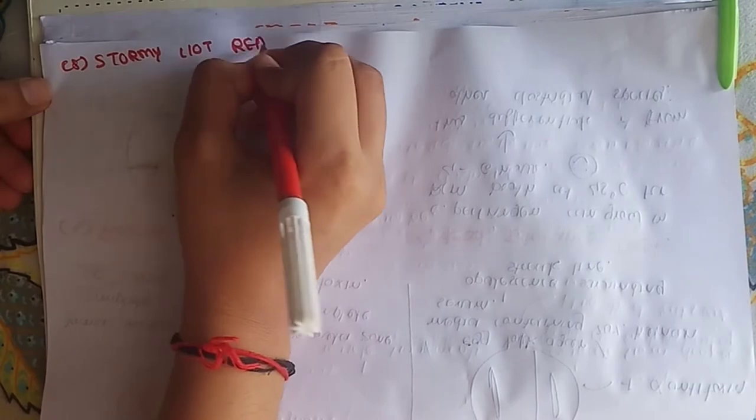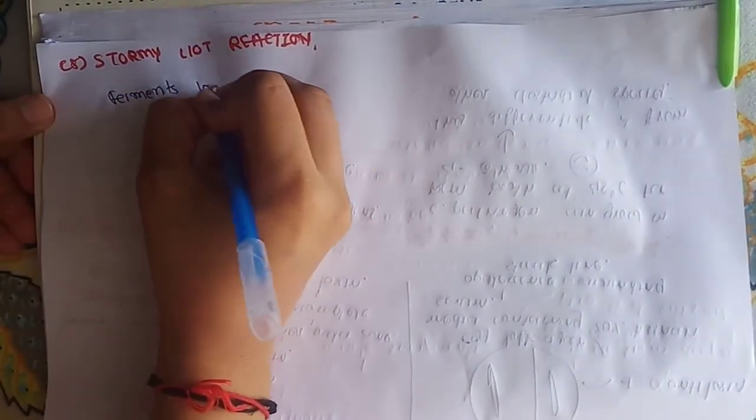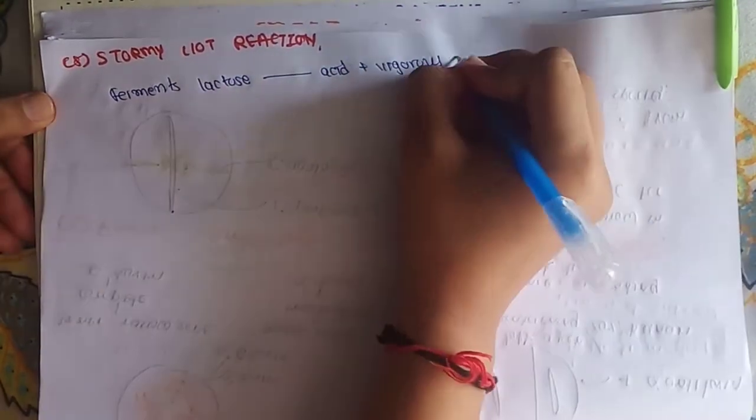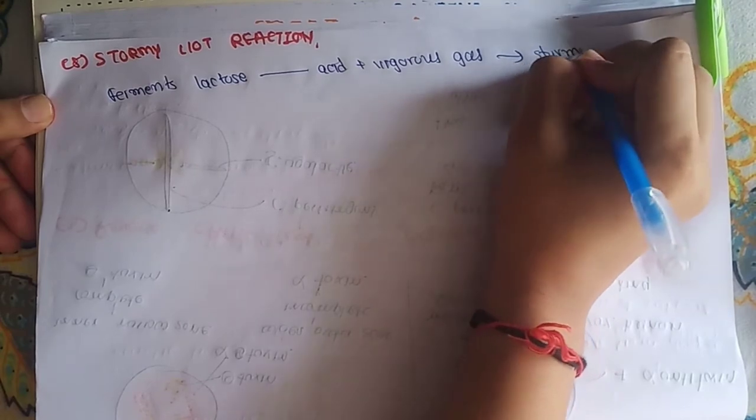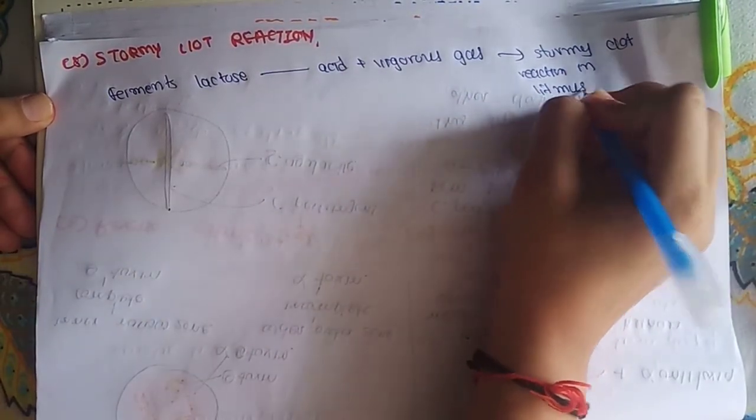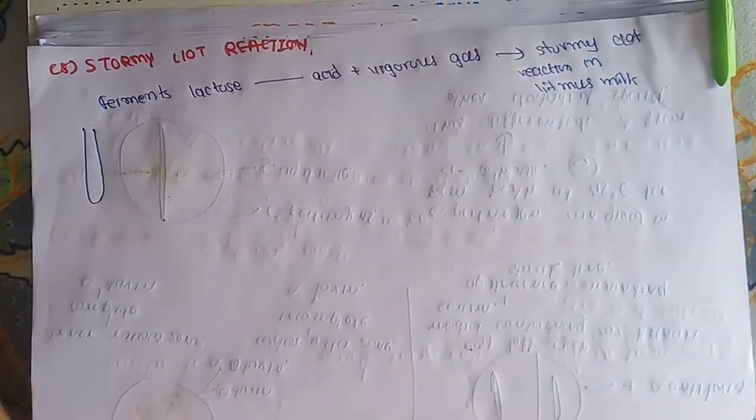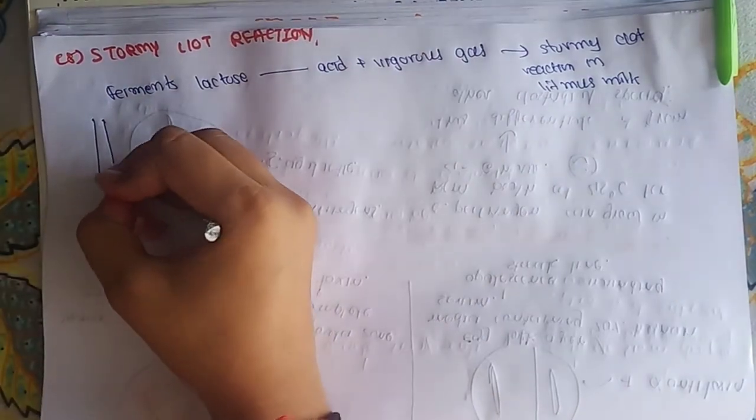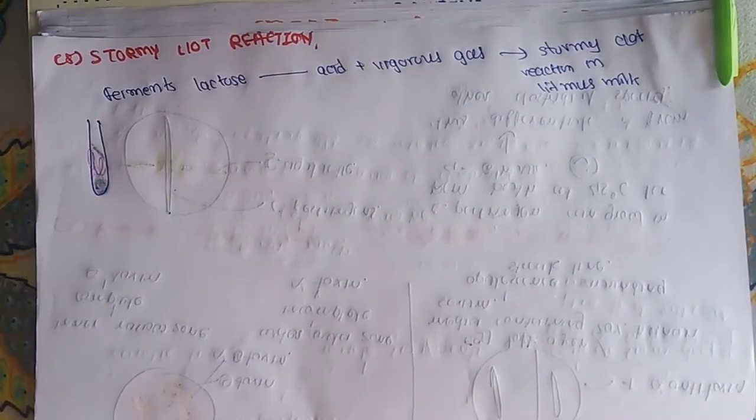The last method is stormy clot reaction. This Clostridium perfringens will ferment the lactose producing acid and gas formation and so it will produce stormy clot reaction in the litmus milk. Suppose there is a test tube filled with litmus milk and Clostridium perfringens will give stormy clot reaction with acid and gas production.